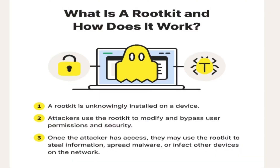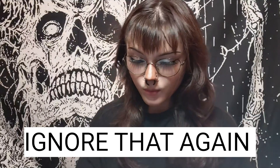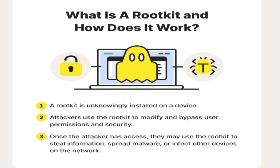What is a rootkit and how does it work? A rootkit is unknowingly installed on a device. Attackers use the rootkit to modify and bypass user permissions and security. Once the attacker has access, they may use the rootkit to steal information, spread malware, or infect other devices on the network.